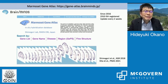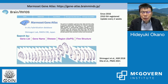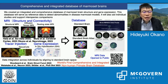We developed the database and incorporated an in-situ hybridization database, which we call the Marmoset Gene Atlas, led by the Tomomi Shimogori lab at Riken CBS. You can search gene expression by gene name, by disease-related gene lists, or by brain region and fine structures. Since 2016, almost 3,000 in-situ hybridization datasets are registered and updated every two weeks. We have created an integrated comprehensive database of the marmoset brain structure and gene expression, which will serve as reference data to detect abnormalities in disease marmoset models.